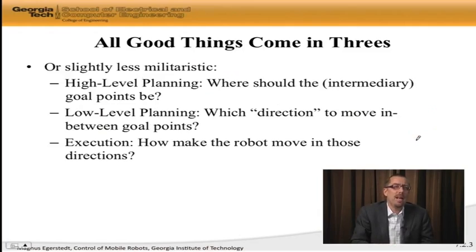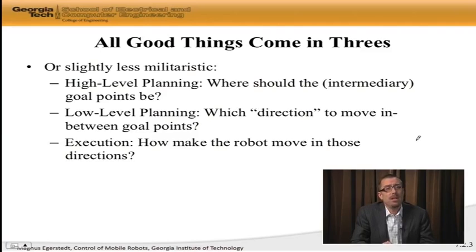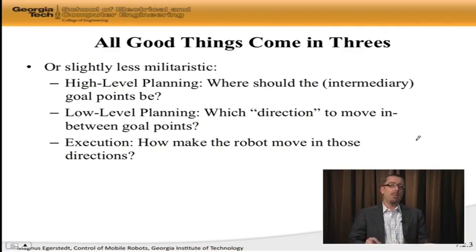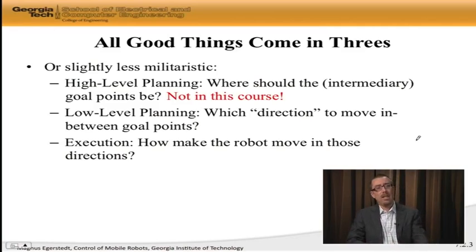If we want to be slightly less militaristic, we can call the highest level a high-level planning level, where we plan where the intermediary goal points should really be. Then the low-level planning is the question of which direction to move in between these goal points. And then at the execution level, previously called the tactical level, it's just a matter of how do we actually execute this — how do we make the robot do what we want it to do?